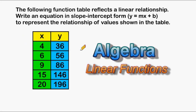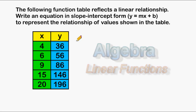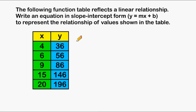What we have here is a function table, and it is given in the problem that this function table reflects a linear relationship. We have to write an equation in y equals mx plus b form. Each pair of values here, or xy values, represents a single point on the coordinate plane. So if we were to graph these points on the coordinate plane, we could connect those points to make a straight line.